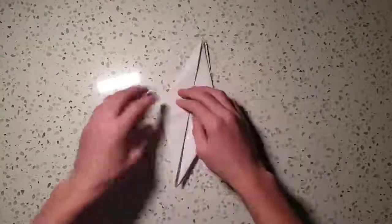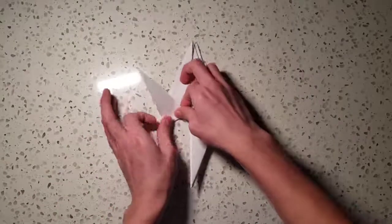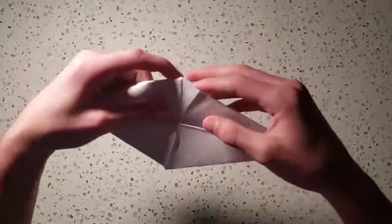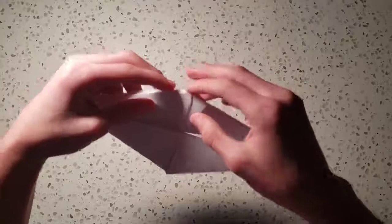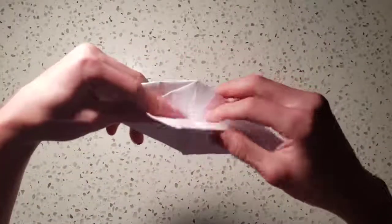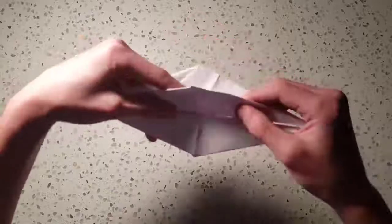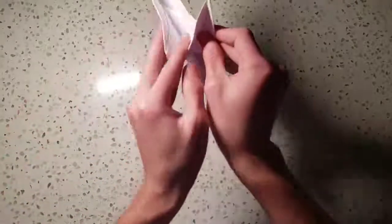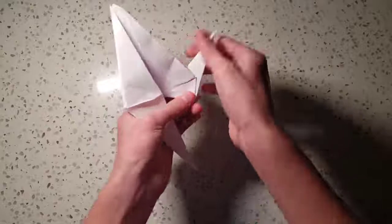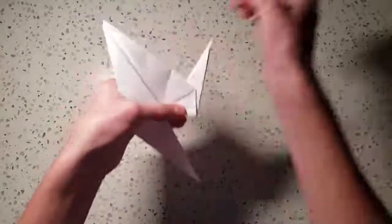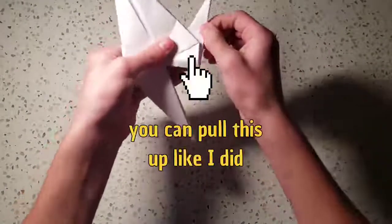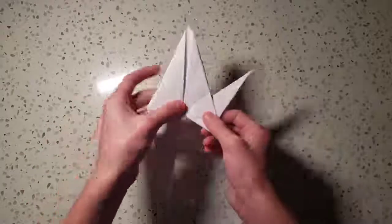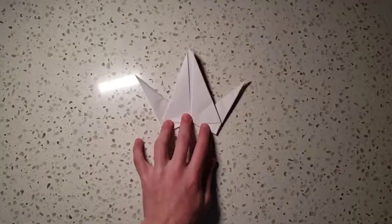So you do it again on the other side, you're going to do a reverse fold, which pretty much you're going to open this up. And then it should be in between this triangle right here. And you're going to follow the folds that you just did, and then fold this right down the half. So it's going to be your tail or your beak, like that. So you do this again on the other side like that.